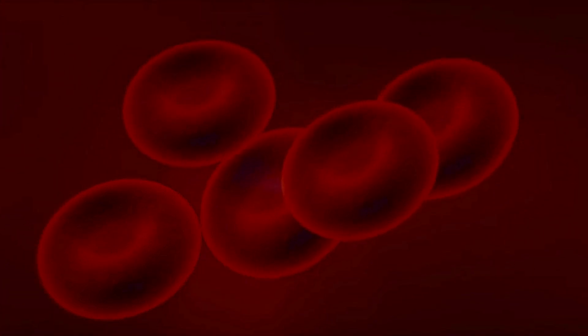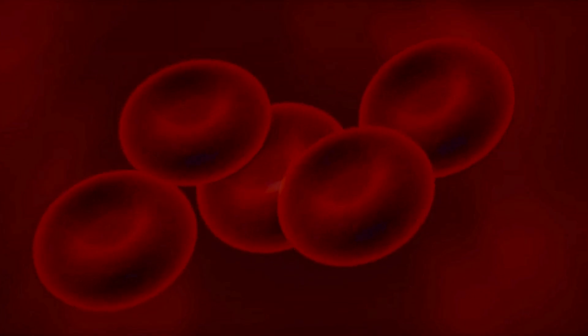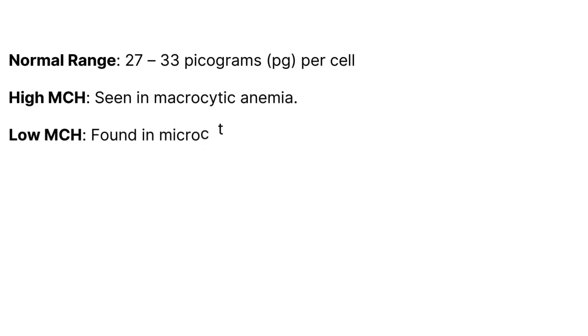2. Mean corpuscular hemoglobin (MCH): hemoglobin per RBC. Normal range: 27 to 33 picograms (pg) per cell. High MCH seen in macrocytic anemia. Low MCH found in microcytic anemia.